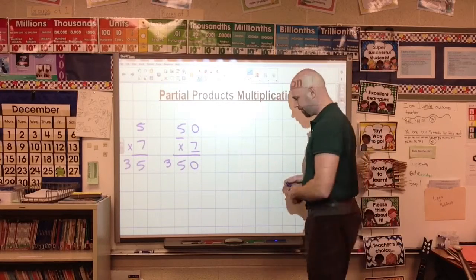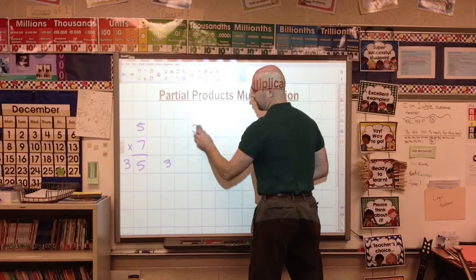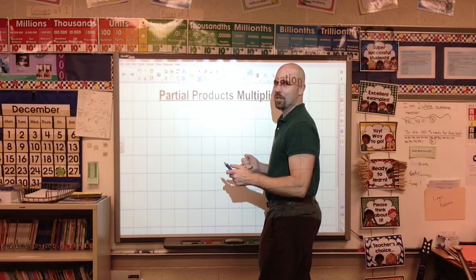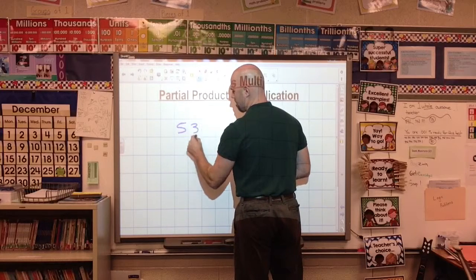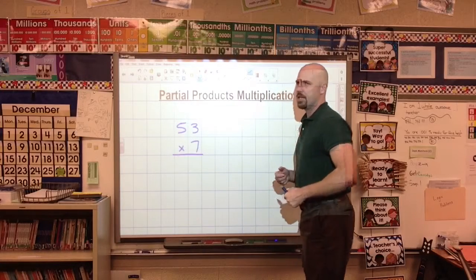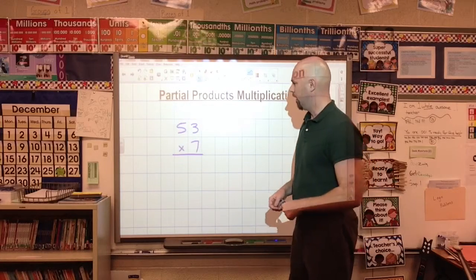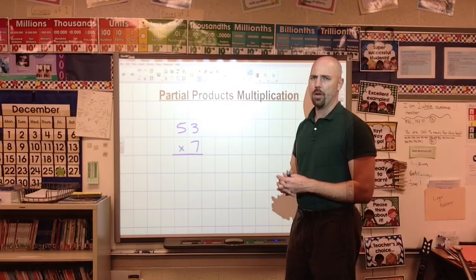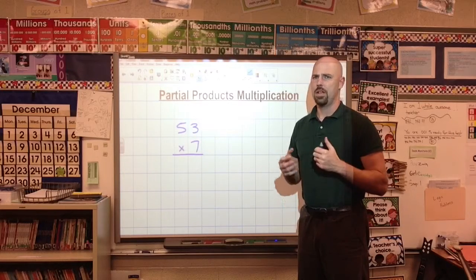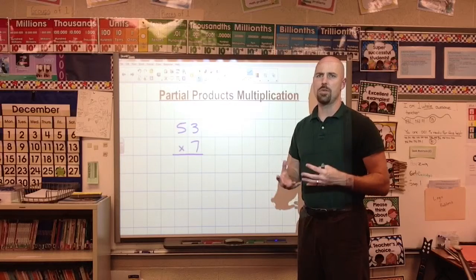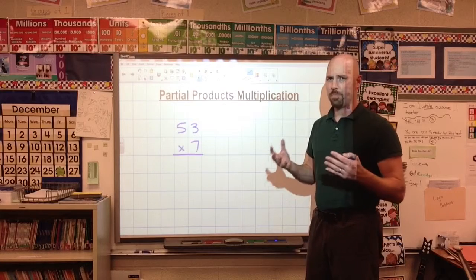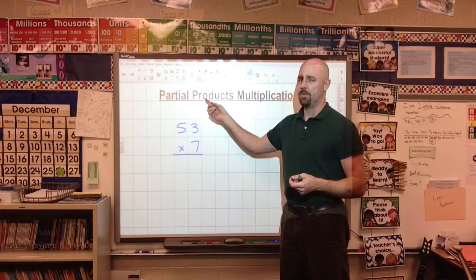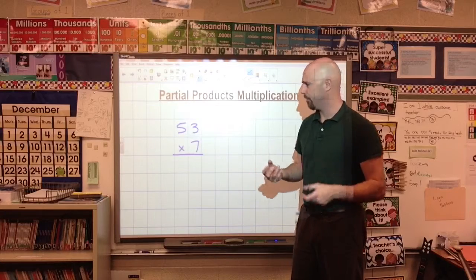Let's take it another step further and get into our first partial products problem. It's very easy when we have that zero on the end. Here's where it gets a little bit tricky. Now I need to do 7 groups of 53. And a lot of kids right away are going to start thinking, well, 7 times 5 is 35, and we just put the 3 there. We can't just drop a 3 into place. We're going to break it into pieces. And I tell them that's what this word means. Partial products means part multiplication answers. We're going to find two answers. We're going to put them together.